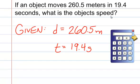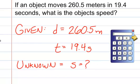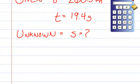What is the object's speed? So in this case, that's the unknown. We don't know what the speed is. We've done the given, we've done the unknown.